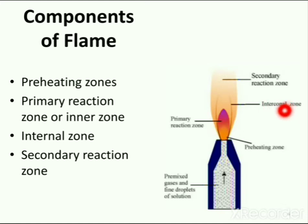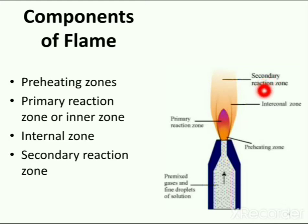The interconal zone can extend up to considerable height. The maximum temperature is achieved just above the tip of the inner zone, and this zone is used for flame photometry. In the last zone, the secondary reaction zone, the products of the combustion process are burnt to stable molecular species by the surrounding air.